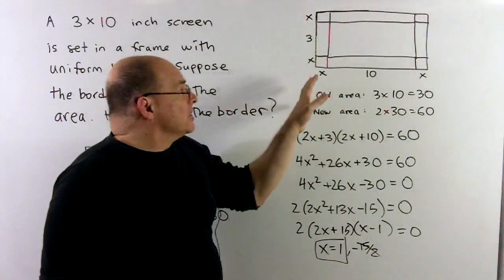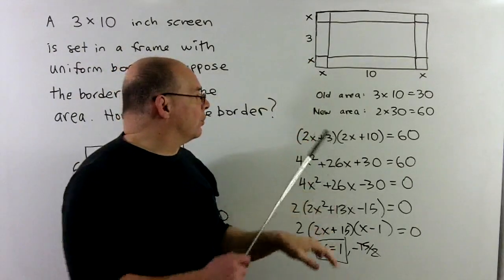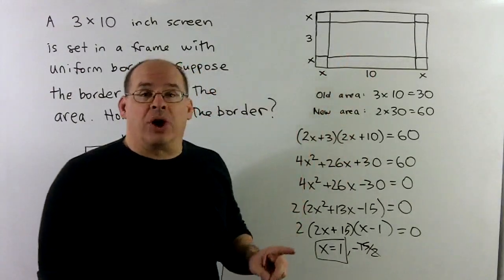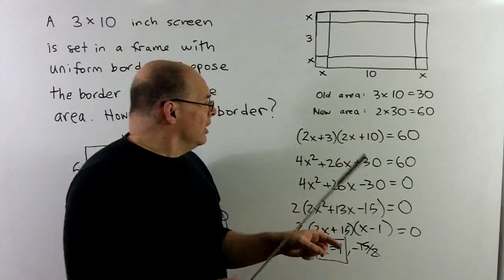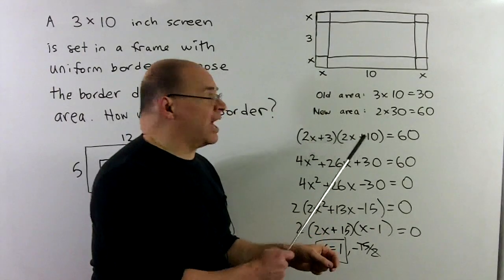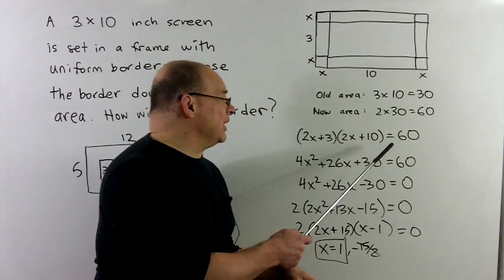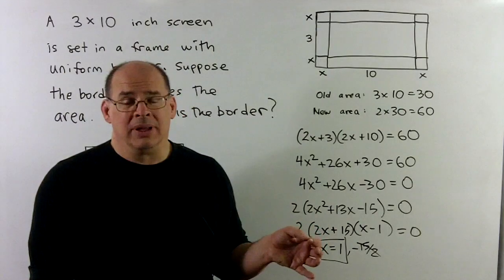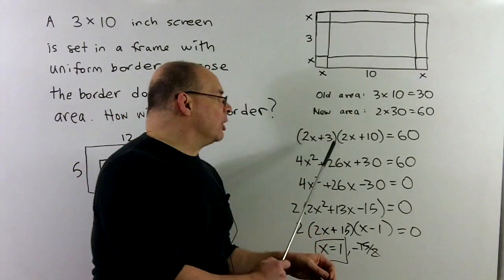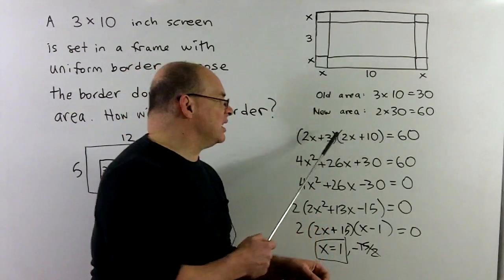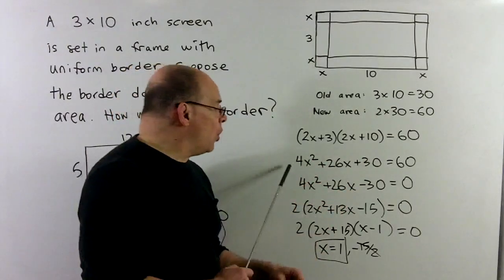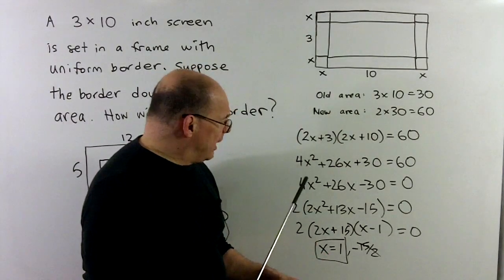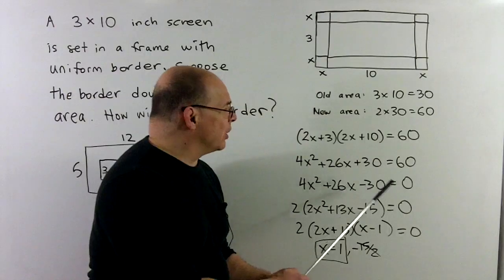The height of this new rectangle is going to be 2X plus 3. The new horizontal is going to be 2X plus 10. The old area is 30. We want to double it. That's going to be 60. So, 2X plus 3 times 2X plus 10, height times base, is equal to the area, which is 60. And this is the quadratic we're trying to solve. Now, note, it looks like it's factored, but it's actually a fake out, because we're not equal to 0. I've got to bring the 60 to the other side. What I'll do first is FOIL. 4X squared plus 26X plus 30 equals 60. The 60 comes over. We have 4X squared plus 26X minus 30 is 0.